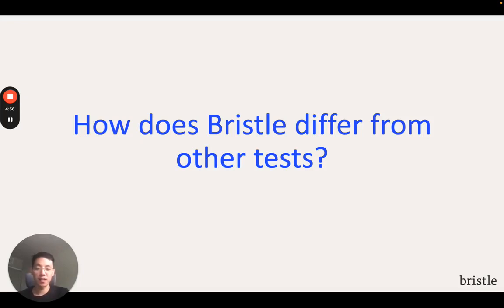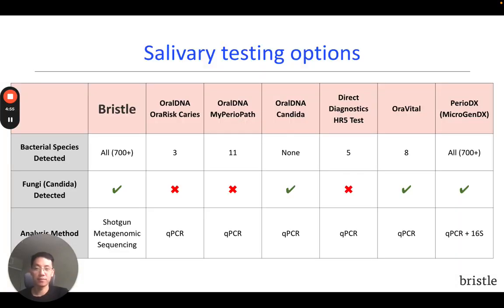How does Bristle differ from other tests? Here's a table of different salivary testing options, along with the bacterial and fungal species they detect and the technology behind them. What you'll see here is that most tests only detect between 3 to 11 different pathogenic bacterial species, and they use a technology called qPCR.